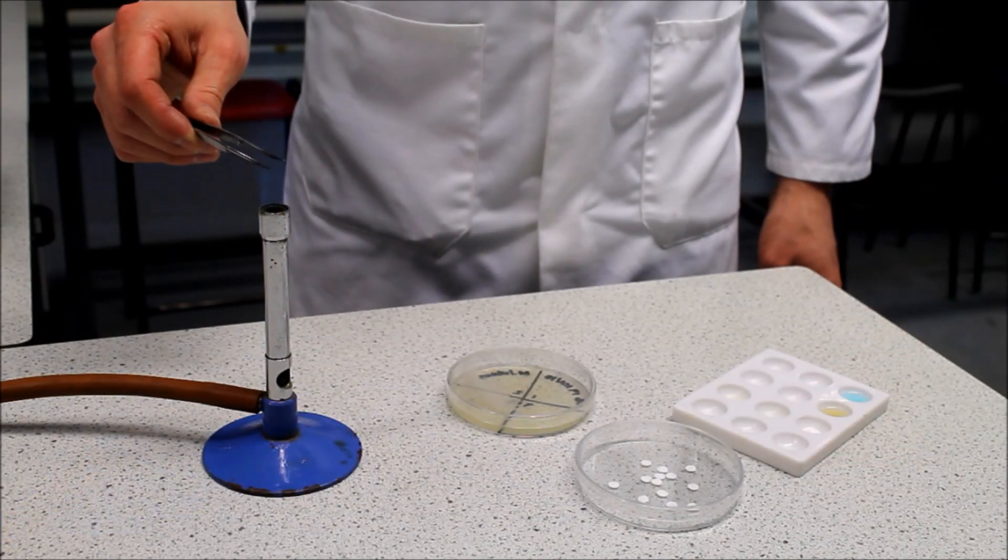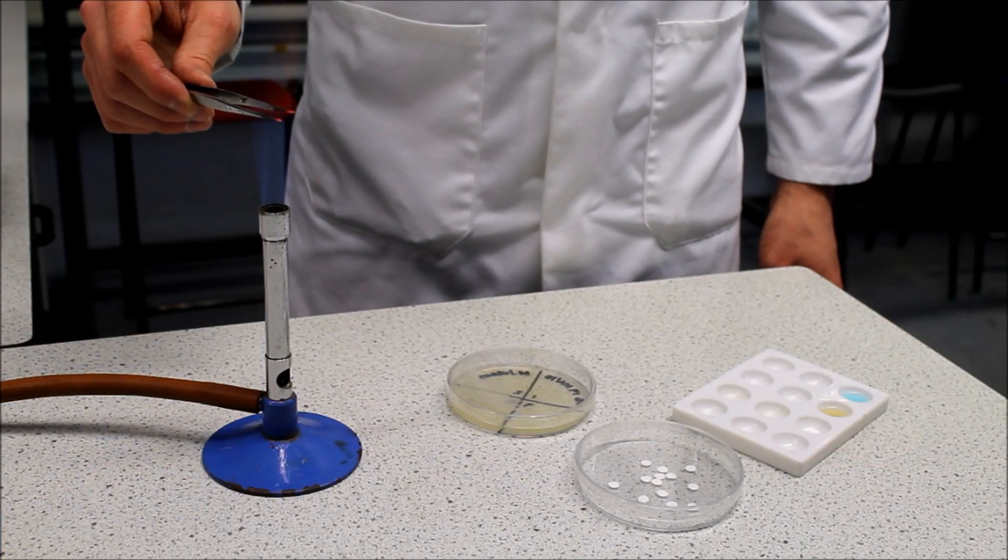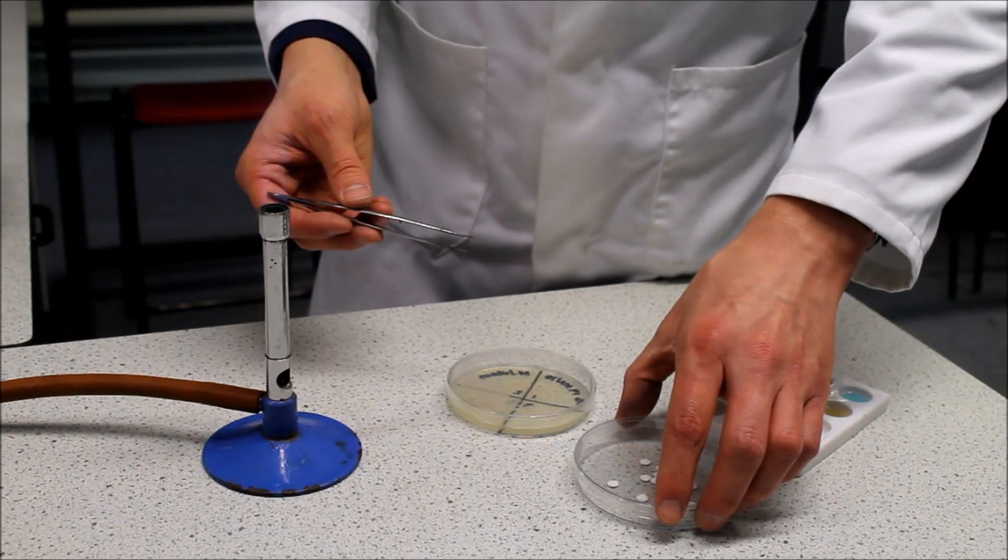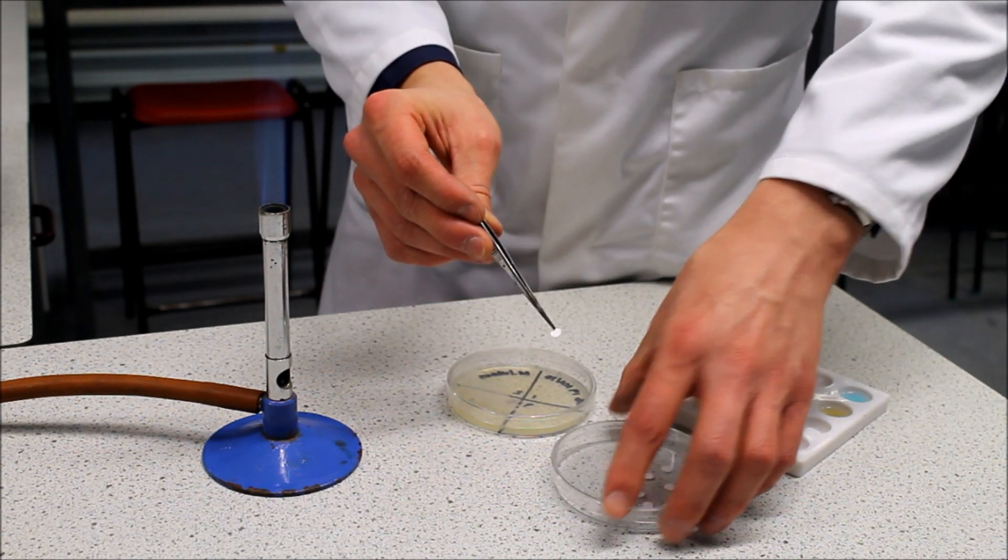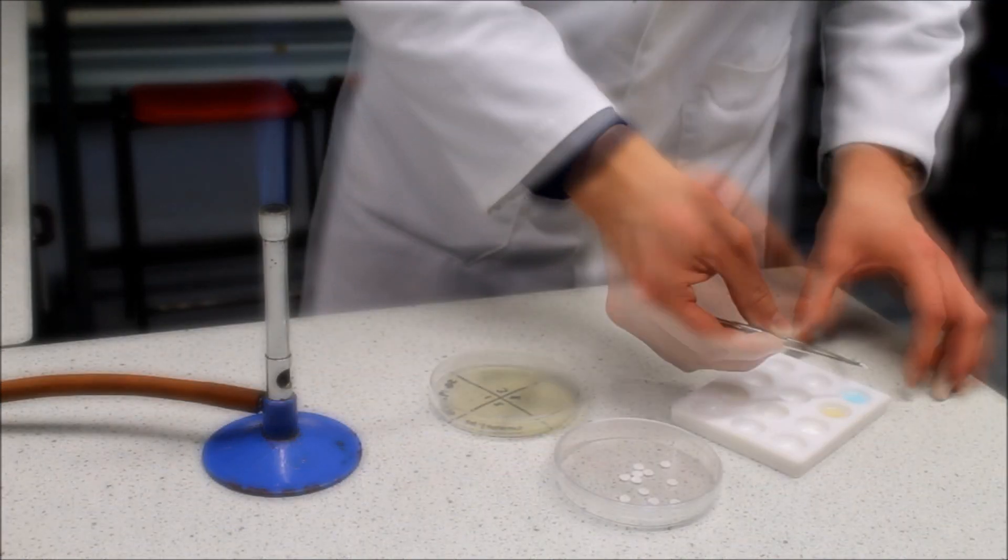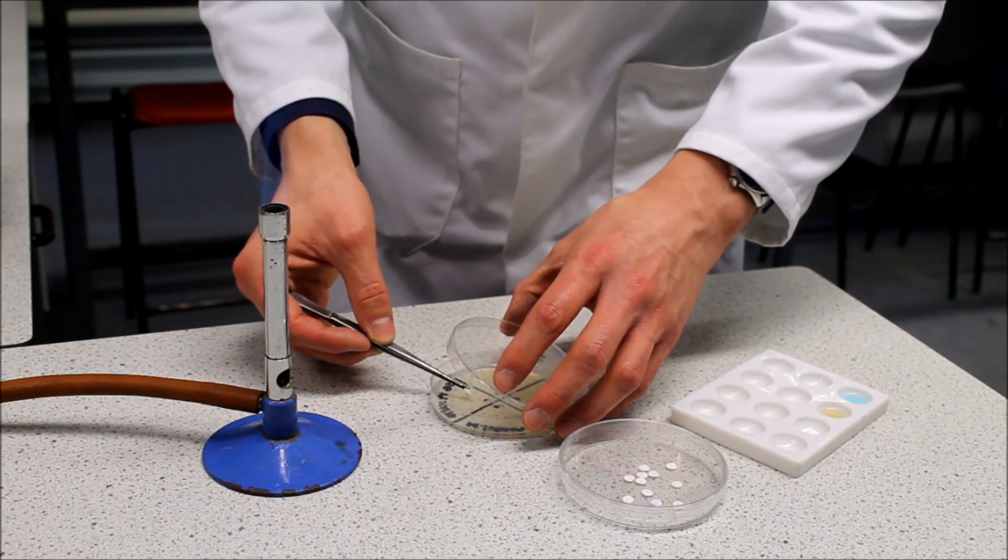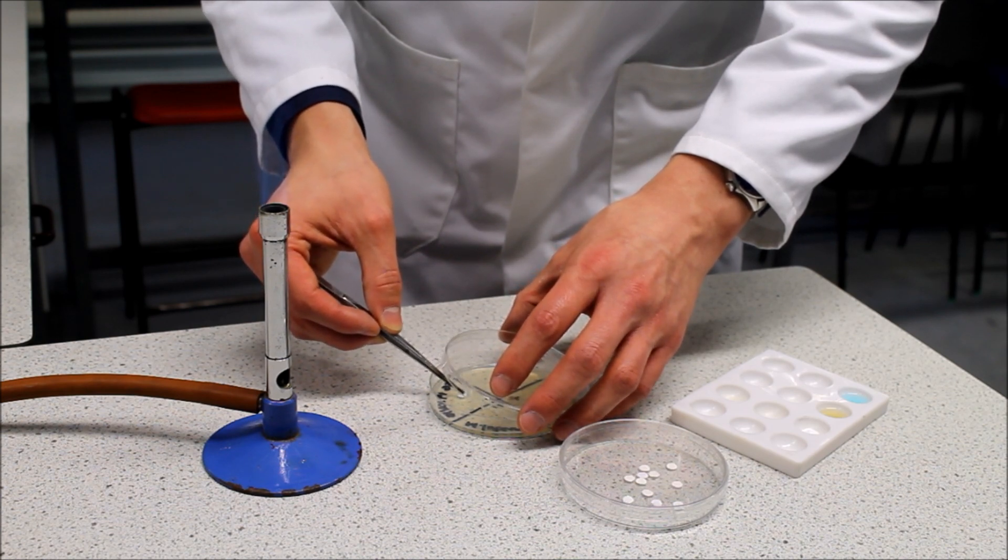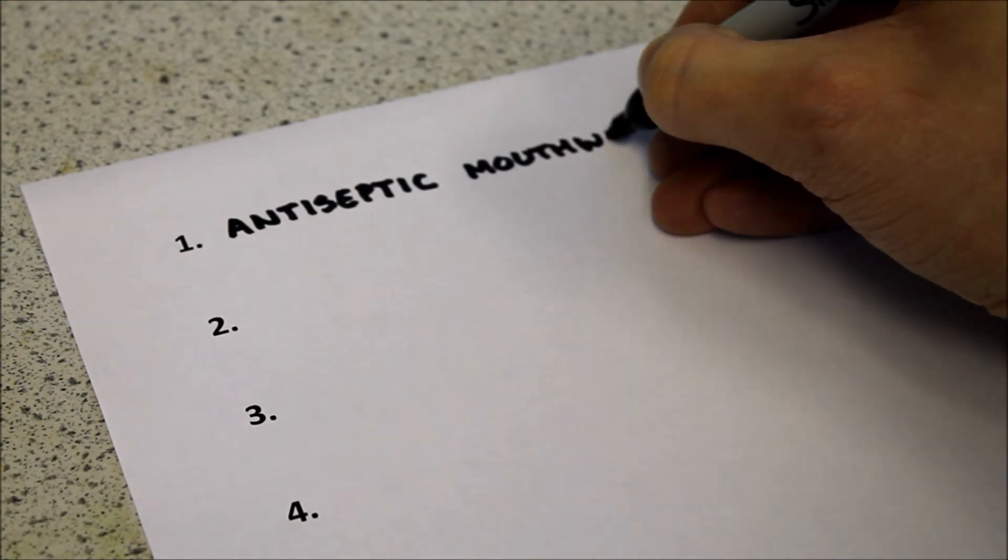Sterilize the tips of the forceps by holding them in a blue Bunsen flame until they glow orange. Once the forceps have cooled use them to pick up a paper disc and dip it into the first of the antiseptics. Again slightly lift the lid of the agar plate at the side nearest the Bunsen burner. Place the disc at the center of section one and replace the lid. Don't forget to make a note of which antiseptic is in section one.